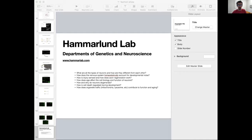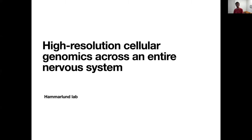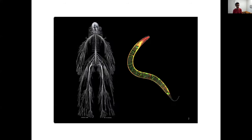So I'll get to high resolution cellular genomics towards the end of this talk, but I wanted to start by giving an overview of current projects in the lab. So we're very interested in the nervous system. The human nervous system is shown on the left and on the right is C. elegans and this is the model we use and our goal is to discover fundamental and conserved mechanisms that work across nervous systems.